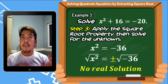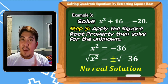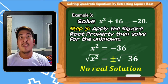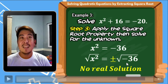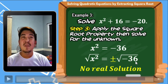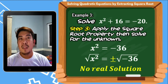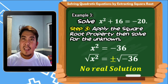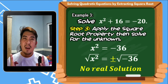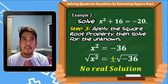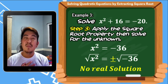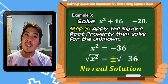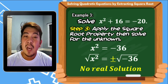Recall from the square root property that the value of k must be greater than or equal to zero — it cannot be negative. But here, the value of k is negative 36. Since no number multiplied by itself gives a negative result, the answer is no real solution. For example, 3 times 3 is positive 9, and even negative 3 times negative 3 is still positive 9.